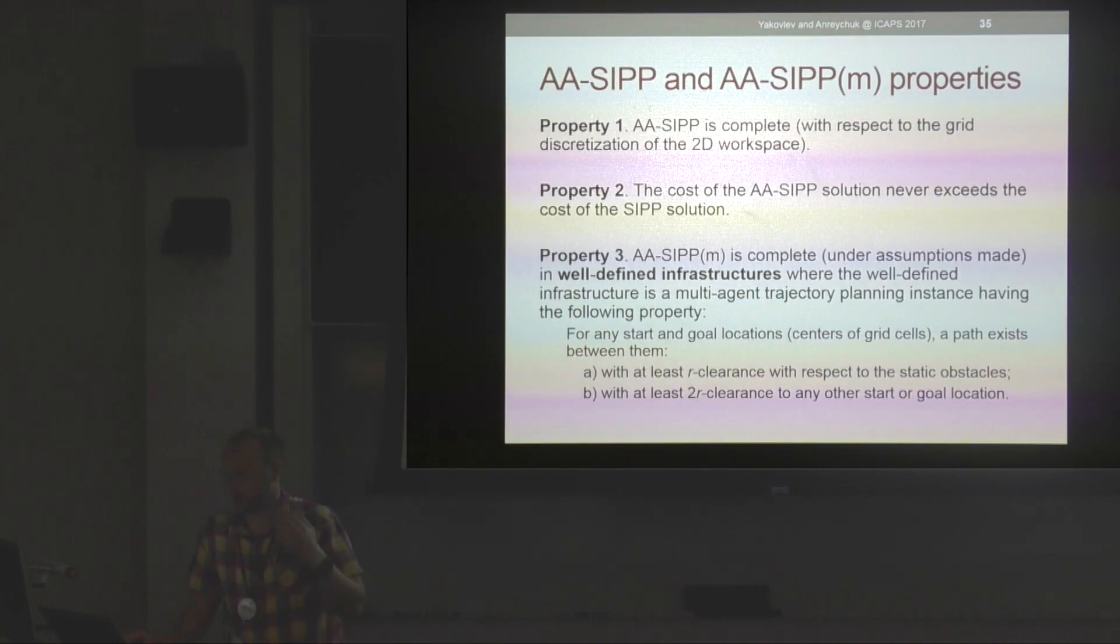We have an algorithm which is complete, and the solution cost never exceeds the cost of regular SIPP solution. When we plug it back into the prioritized framework, it is complete under well-defined infrastructures, where well-defined infrastructure is just a special type of pathfinding instance. The formal notion is on the slide, but basically it means that start and goal locations are chosen in such a way in the environment that any agent standing on its start or goal location for any amount of time wouldn't block other regions from getting to their goals.